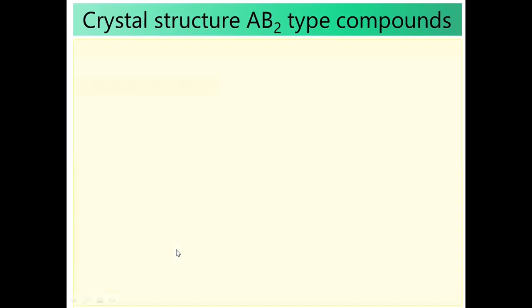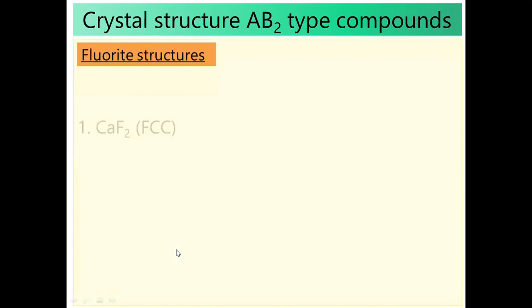The fluoride structure example is CaF2. In CaF2, Ca²⁺ is the cation and F⁻ is the anion. Fluoride is a smaller anion, hence fluoride ion goes to a void position. Calcium belongs to S-block and to alkaline earth metals in the fourth period, so calcium is a bulkier cation. Only in fluoride structure: cation occupies sphere, anion occupies void.